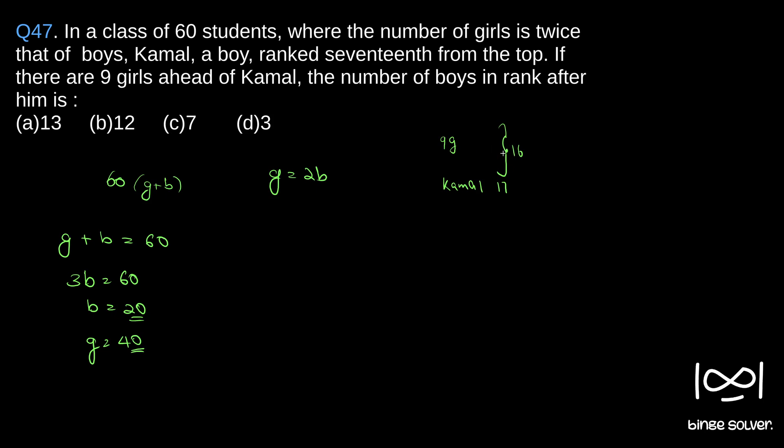16 minus 9 is 7 boys. So 7 boys and 9 girls are ahead of Kamal. The question asks for the number of boys in rank after him. We know there are total 20 boys. 7 boys are ahead of Kamal, and Kamal is a boy, so total 8 boys are accounted for.